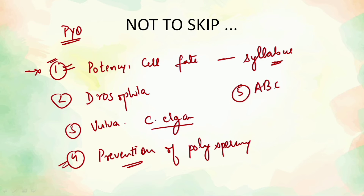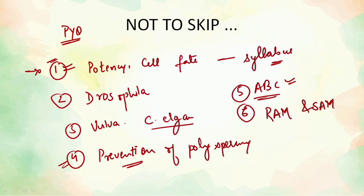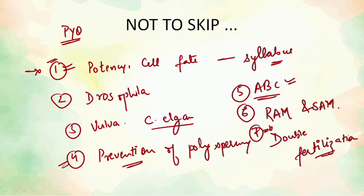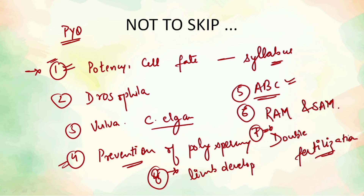The ABC model of flower development is very important — almost every second year there is a question from this. Then we have RAM and SAM — root apical meristem and shoot apical meristem. A good understanding of double fertilization and its key features is also important, though not in excessive depth. These are the essential topics you cannot skip. For more depth, you can also cover limb development in frog.